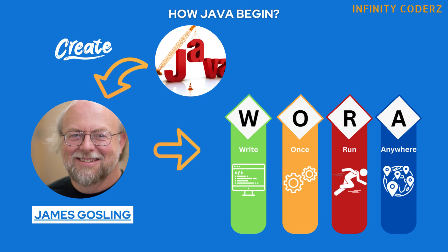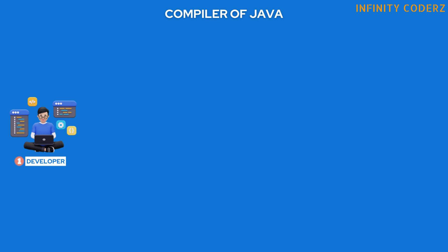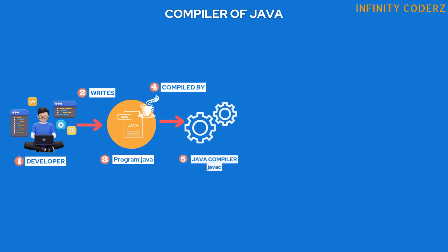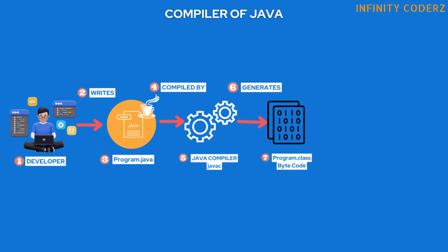Next, let's look in depth at how the Java compiler works. Compiling Java code involves several steps that take the code from a developer's source files to executable machine code. A developer writes Java code using a text editor or an integrated development environment (IDE), such as Eclipse or IntelliJ IDEA. The code is saved with a .java extension. The Java code is then compiled using the Java compiler, Javac, which reads the .java source files and translates them into bytecode — a platform-independent representation of the code.